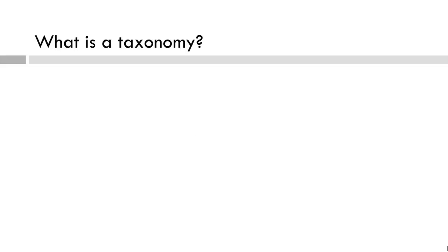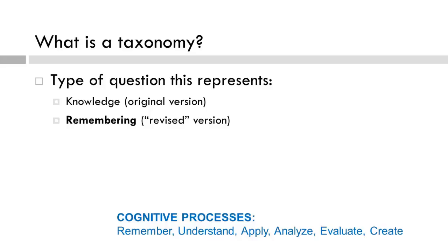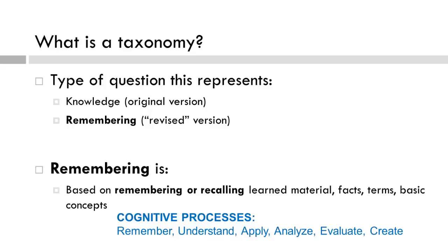What is a taxonomy? It refers to a classification of entities, sometimes in a hierarchical manner. Initial thinking behind Bloom's original taxonomy approached classifying educational outcomes in that manner. If you selected 'remembering,' you are correct. It refers to remembering or recalling learned materials, facts, terms, and basic concepts.